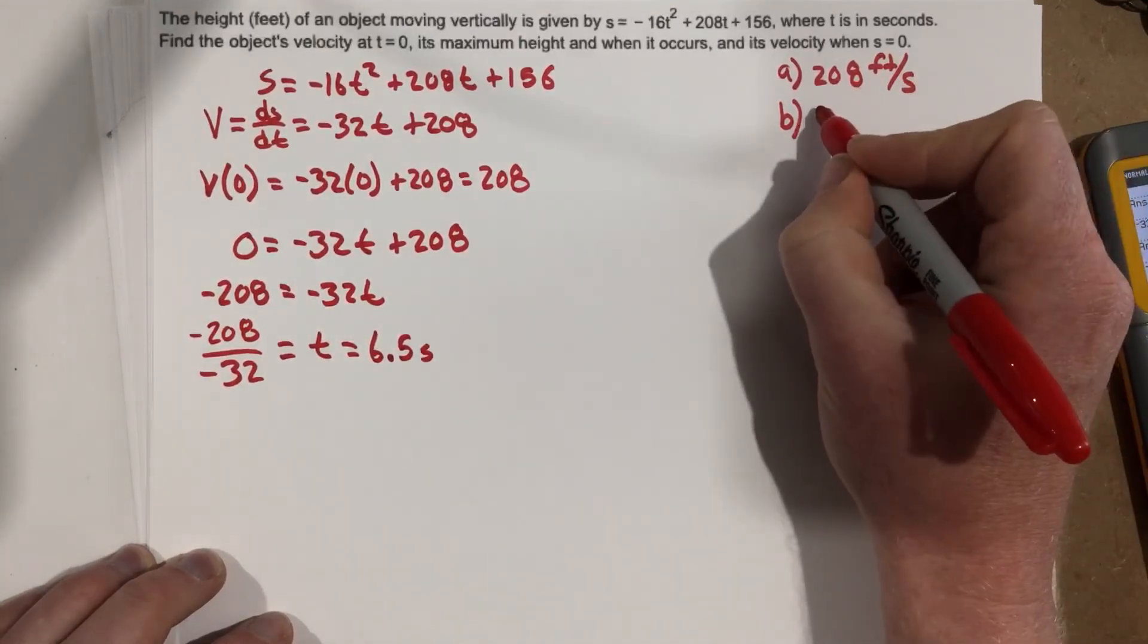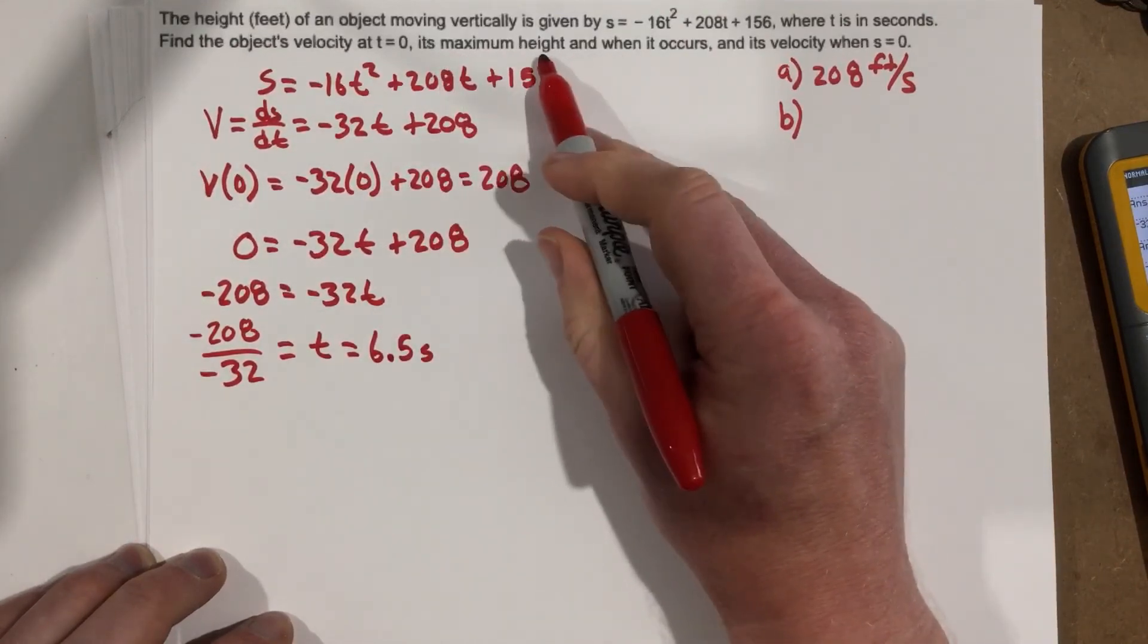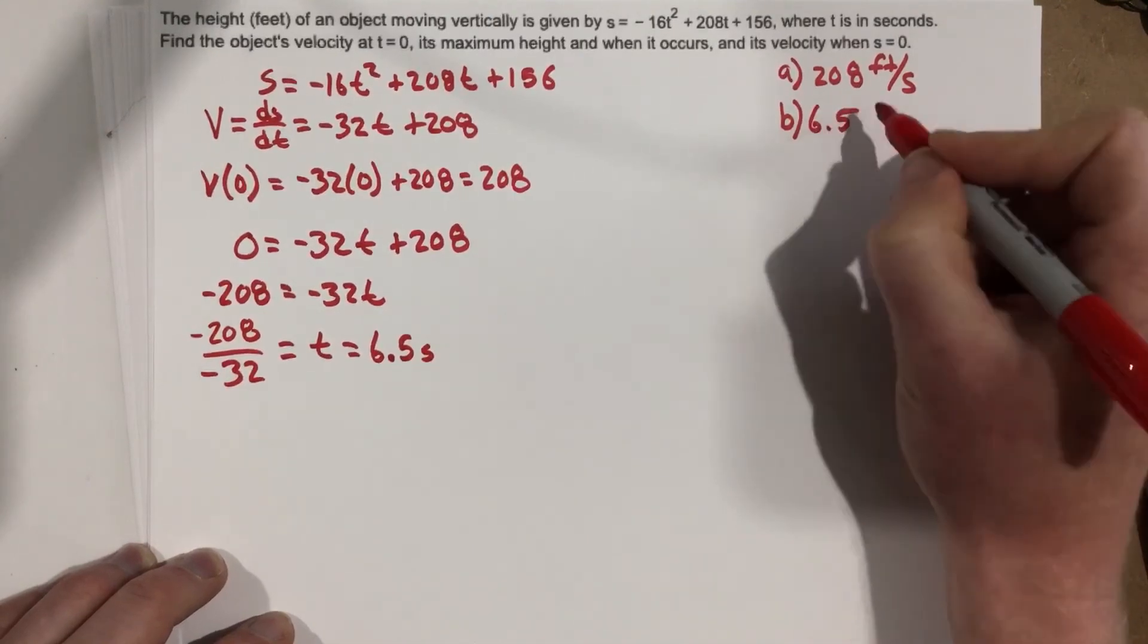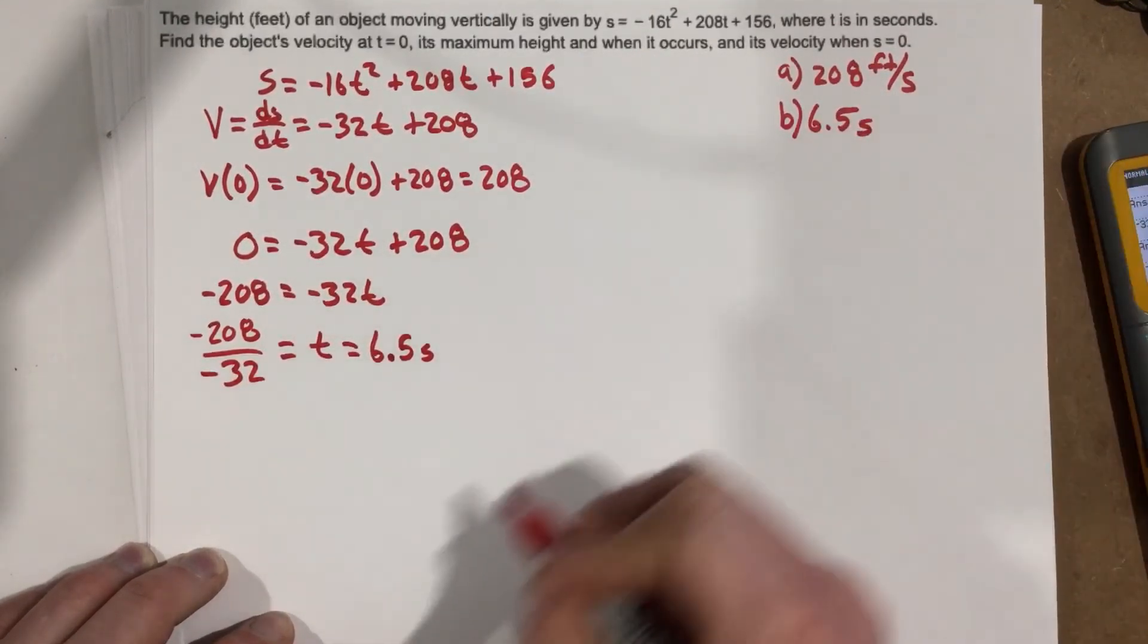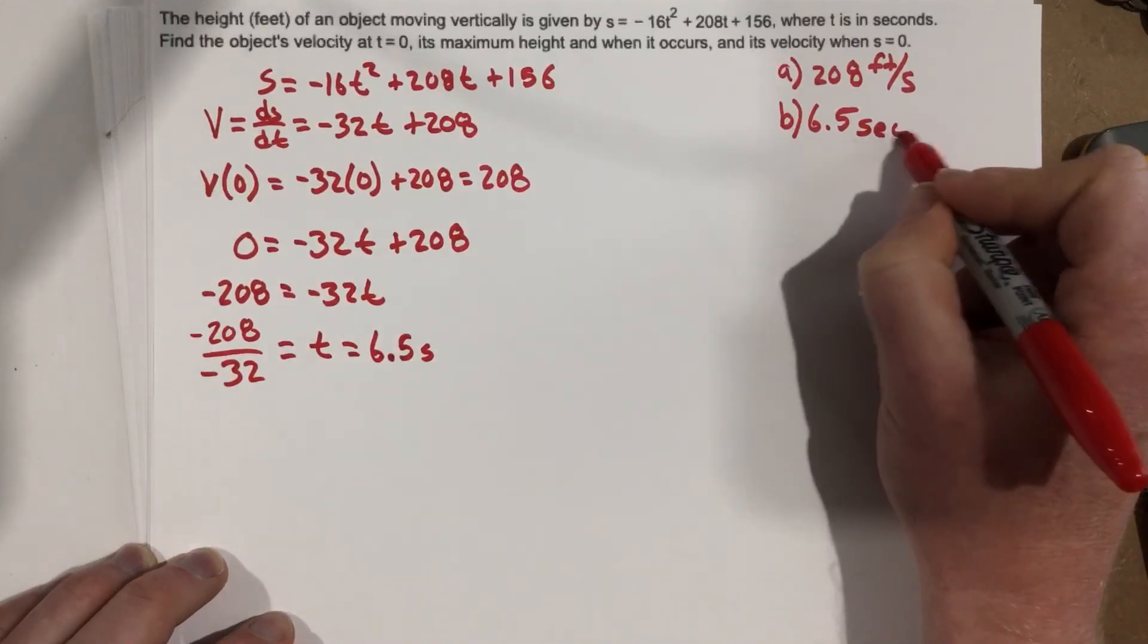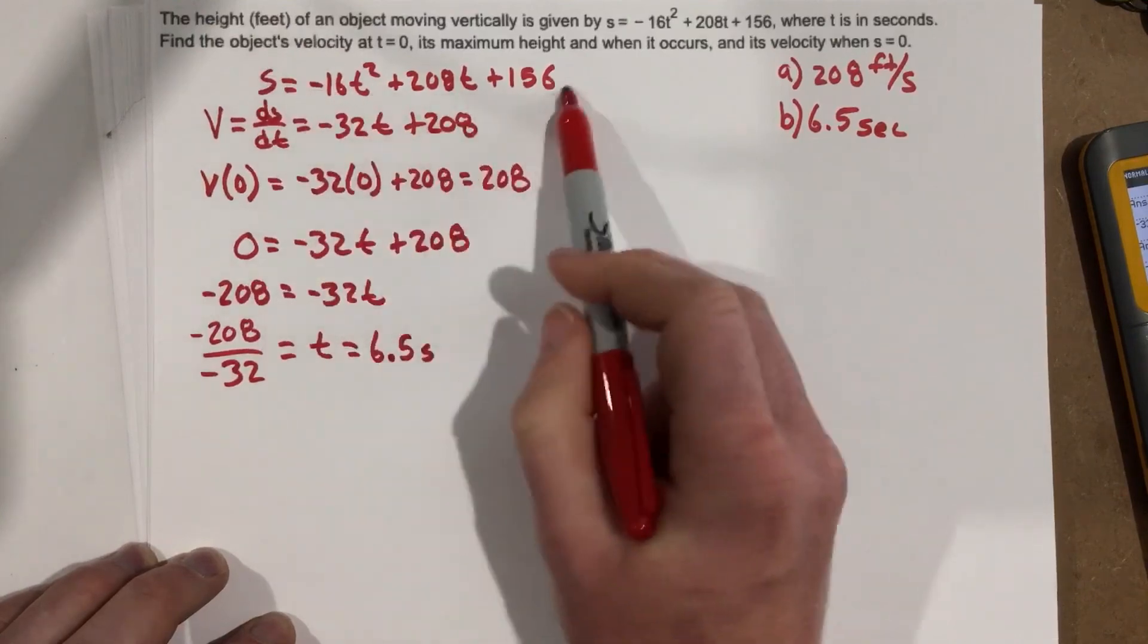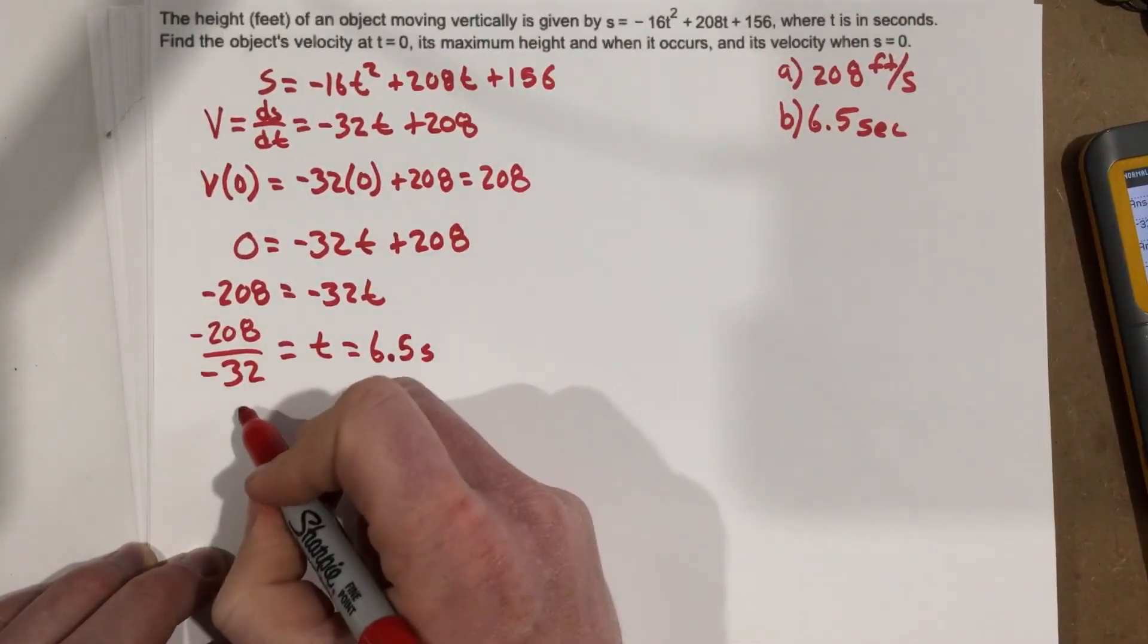So I can write that here. This is when it occurs. So that's the maximum height. When it occurs, it occurs at 6.5 seconds. And we have to find when it occurs first, to figure out the actual maximum height. Because now we can use that time, and we can go back to the height equation right here, and we can plug in that time, and we'll find the maximum height.